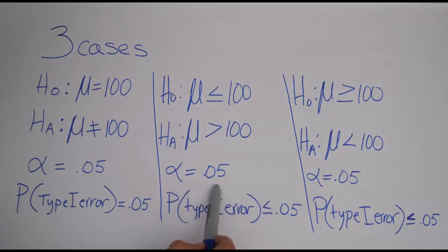And again, the alpha doesn't have to be 5%, it is here in my example, but if it's 5%, then the probability of that type 1 error is less than or equal to 5%.